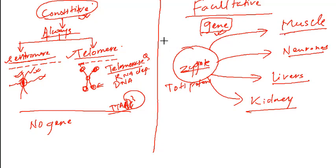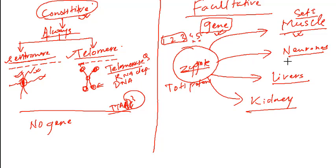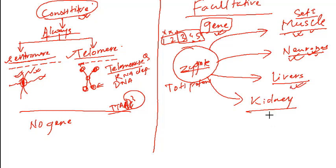Let's say there are five genes — one, two, three, four, and five. For muscle, genes one, two, and three are active, while four and five are switched off. For neurons, a different set — say three, four, five — will be active, and one and two will be inactive. Different sets of active and inactive genes characterize different cell types — neurons, muscles, and other tissues all have their own pattern.